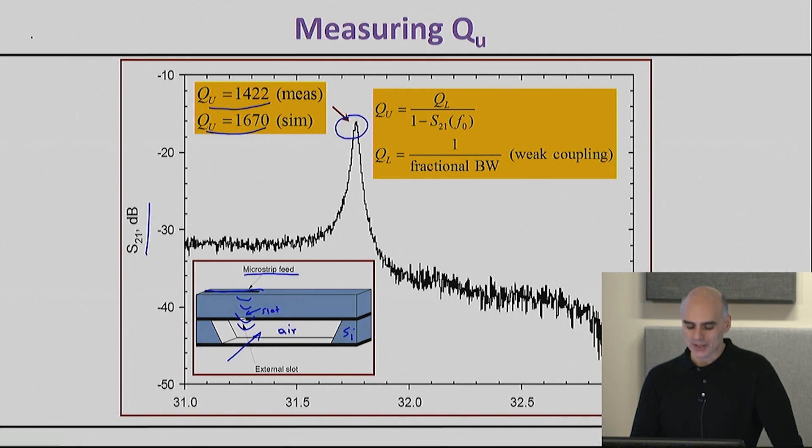In this picture that you see here, I don't show you the output, but there is obviously another output line here with exactly the same slot that the energy goes through. In other words, the energy comes from the input, it weakly couples in and comes out, and this is the S21 measurement that we're making here.